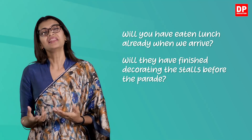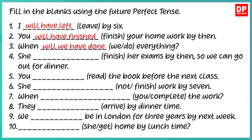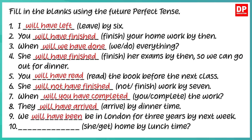Let's now do a small exercise together — fill in the blanks using the future perfect tense. 'I will have left by six.' 'You will have finished your homework by then.' 'When will we have done everything?' 'She will have finished her exams by then, so we can go out for dinner.' 'You will have read the book before the next class.' 'She will not have finished work by seven.' 'When will you have completed the work?' 'They will have arrived by dinner time.' 'We will have been in London for three years next week.' 'Will she have got home by lunch time?'